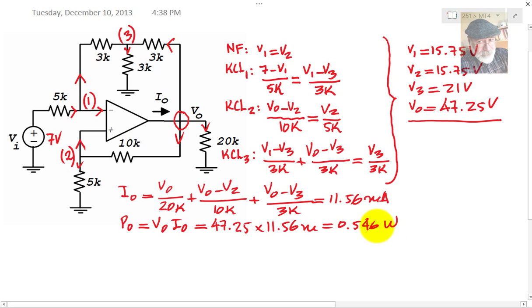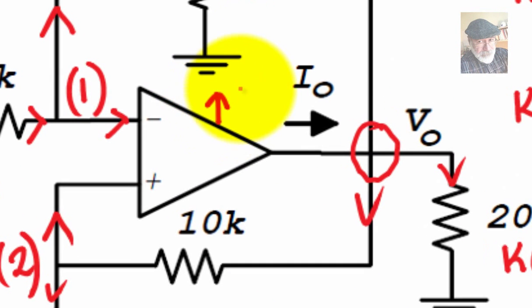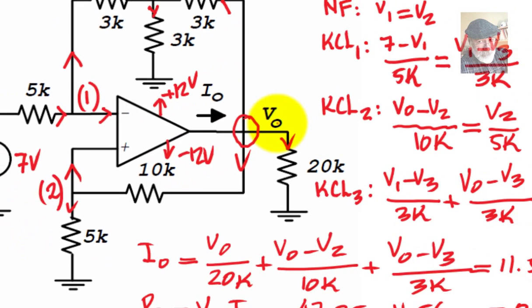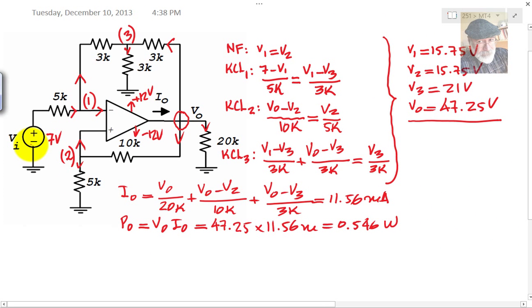Now for the last part. What is the maximum value of the input voltage VI that will non-saturate this op-amp if it's been powered up from a dual power supply of plus 12 volts and negative 12 volts? That is, if the output is 12 volts, what is the input?